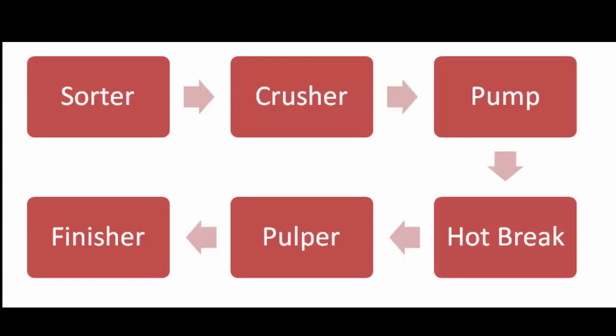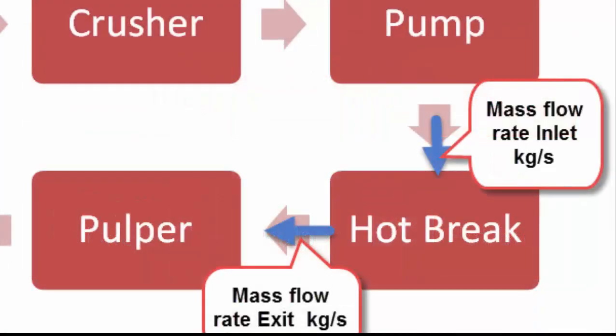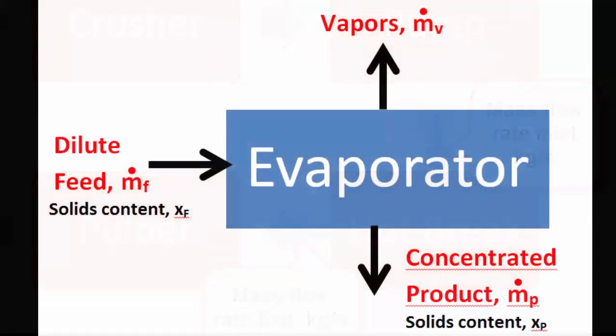it is necessary first of all to know the flow of product. In other words, we would like to trace the flow of product through the entire plant, but also it is important to determine in quantitative terms what are the mass flow rates of various product streams. So for example,